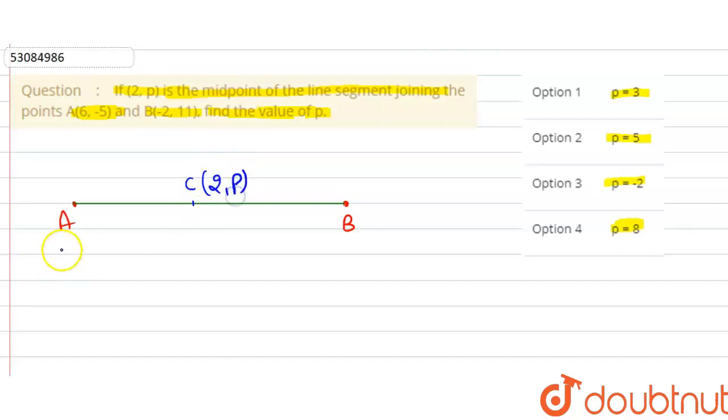We have given the coordinate of A is (6, -5) and the coordinate of B is (-2, 11).